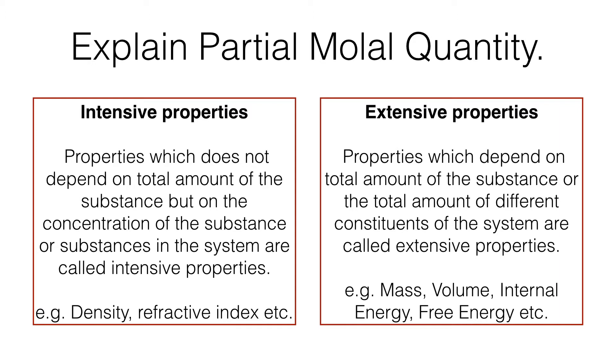On the other hand, properties which depend on the total amount of the substance or the total amount of different constituents of the system are called extensive properties. For example, mass, volume, internal energy, free energy, etc. depend on amount not the concentration.